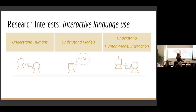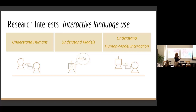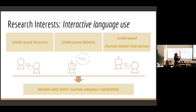So what goes into that? There's some understanding of humans, and some understanding of how models work. Language models work by predicting the next word given a context typically. And we also need to understand how humans perceive the dialogue that is being generated. Taken together, hopefully this can lead to my research interest of getting towards models with better adaptive, human-like capabilities.